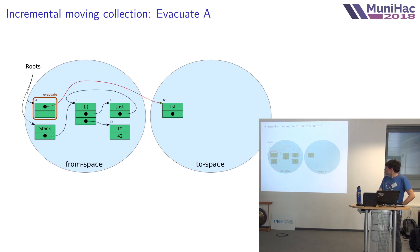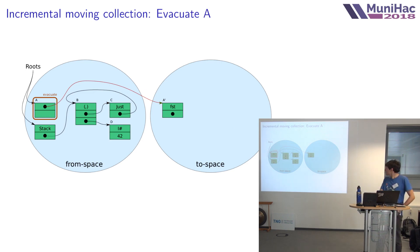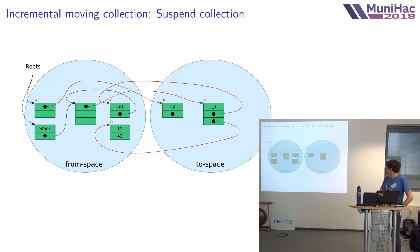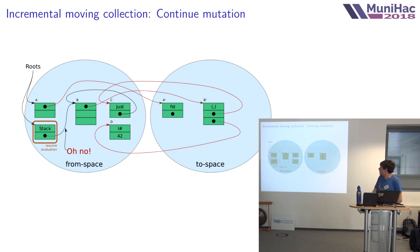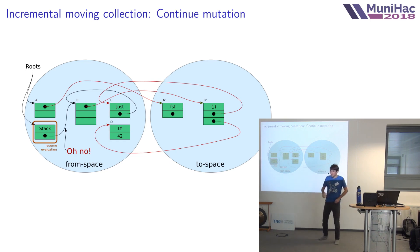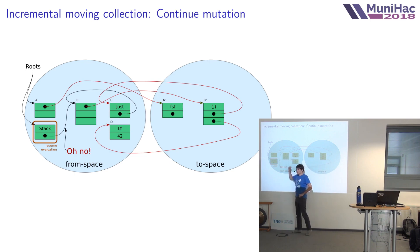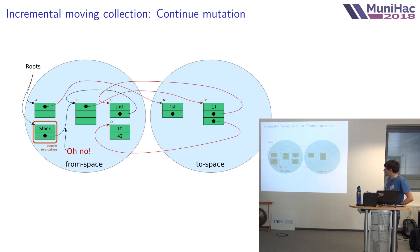Now we allow the thread associated with this stack to resume evaluation. But this stack has a reference to B. B was previously a tuple, but now it's been replaced with a forwarding pointer. If you try to interpret this as a tuple, you get a segfault. The mutator is going to be looking for a very different object than it will find there. Consequently, just naively stopping partway through our moving collection isn't going to work. So how can we make moving collection safe? There are a few options.